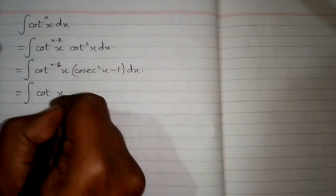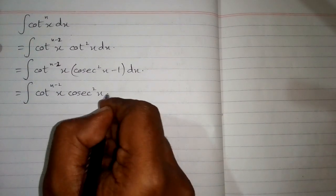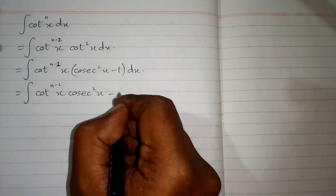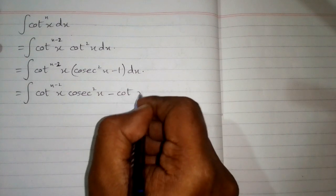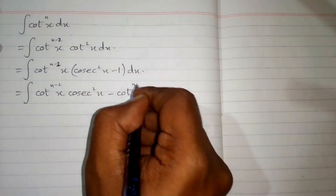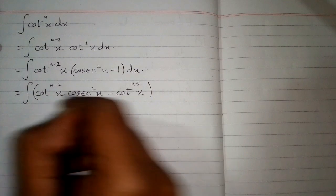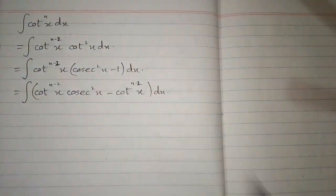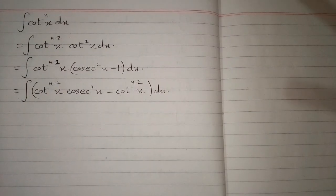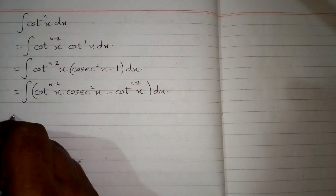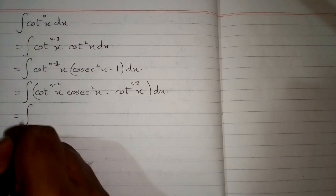So we have the integral of cot(x) to the power n minus 2, multiplied by (csc²(x) minus 1), then dx. We will apply the integral on both terms.